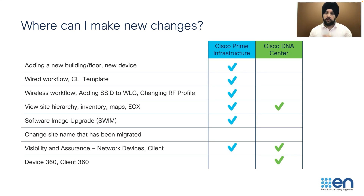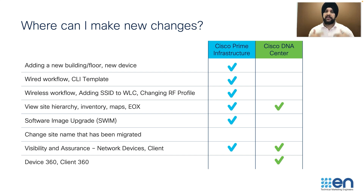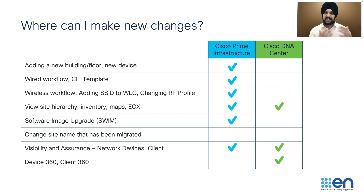When doing coexistence, to avoid any split brain issues, we're going to make sure that all changes are made only in Prime and not in Cisco DNA Center. If there are any changes made on Cisco DNA Center, they will revert back whenever you run the migration tool again. So make sure that if you want to make any changes to the migrated sites, devices, or floors, you do that on Cisco Prime. Same thing with the wired or wireless workflow — if you want to push any configuration like SSID or CLI template, make sure you do that only on Cisco Prime while you are in coexistence mode.